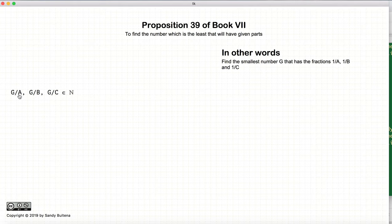So the idea here is that we're dealing with whole numbers, so we're saying that G/A is a whole number, no 3.5, that doesn't work. All right, so we're looking for the smallest number of fractions, 1/a, 1/b, and 1/c.